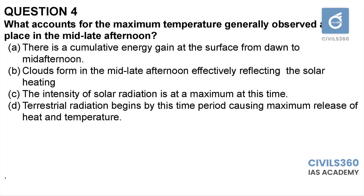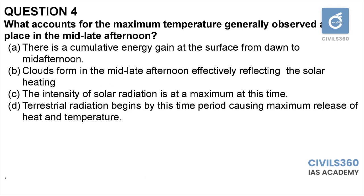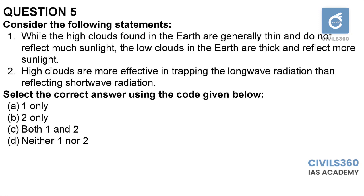Option B is incorrect because clouds reflecting solar radiation would mean less heating, not more. Out of options A and C, option A is best. The mid and late afternoon does not have the highest temperature because solar radiation is most intense then; rather, it is because of the cumulative energy gain from early morning up to that period. Fourth question: option A.